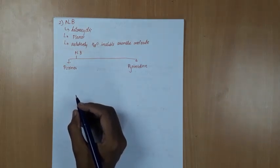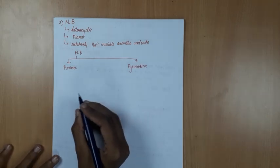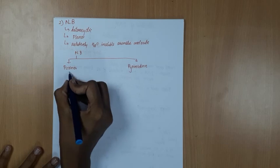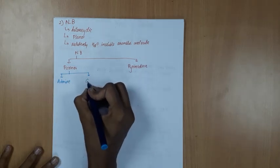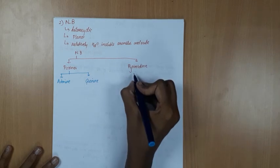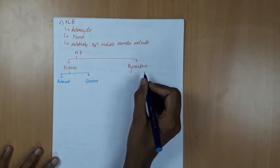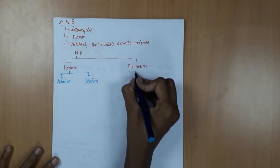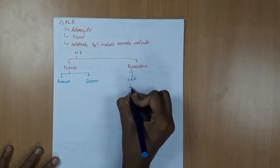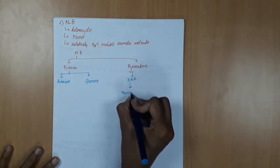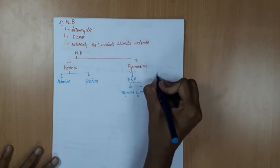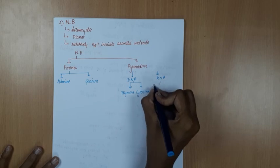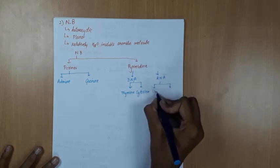Two different nitrogen bases with the purine ring are found in DNA. The two common purine bases found in DNA as well as RNA are adenine and guanine. The major two pyrimidine bases found in DNA are thymine and cytosine. In RNA, in place of thymine, uracil is present.